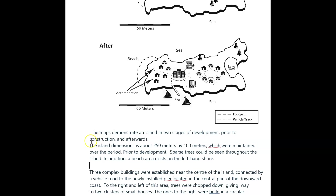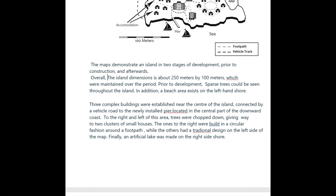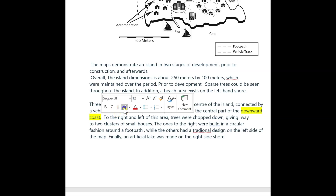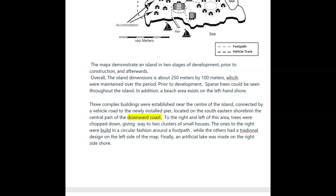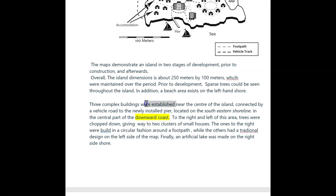So paragraphs — overall, remember, we have to have that word 'overall.' That's really important. And then you're getting into your next section. So three complex buildings were established near the centre of the island, connected by a vehicle road to the newly installed pier, located in the central part of the downward coast. Now geography — give me some geography here, that's what we want. Located on the south eastern shoreline. So I'm really looking here for geography and passive verbs.